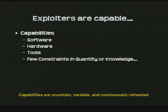At this point there are few constraints in quantity or knowledge of adversaries. The message you should take away: capabilities are completely uncertain. You don't know from one adversary to the next exactly what their capability is. They're highly variable over time, tend to always be increasing, and they're continuously being refreshed. They always have something new and you're not going to know about it.